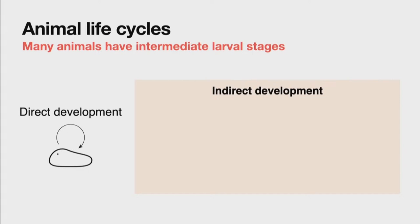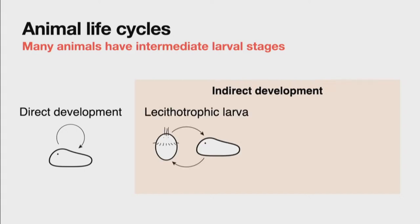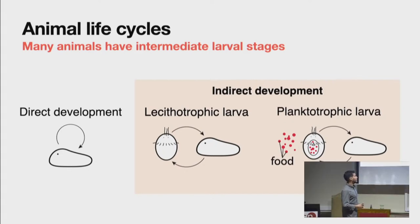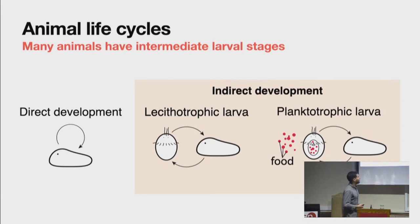For this talk we classify indirect development into two main modes based on whether the larva eats or uses maternal resources. If the larva lives on maternal resources, it is called non-feeding or lecithotrophic, using yolk provided during embryogenesis. If the larva actually eats and lives in the water column, it is called planktotrophic — tiny minute creatures swimming in the water column eating mostly phytoplankton.